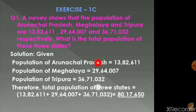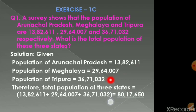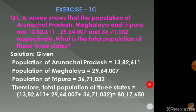The statement: population of Arunachal Pradesh is 13,82,611, population of Meghalaya is 29,64,007, population of Tripura is 36,71,032. Therefore, total population of 3 states — we will simply add the 3 numbers. By adding them, our answer is 80,17,650.